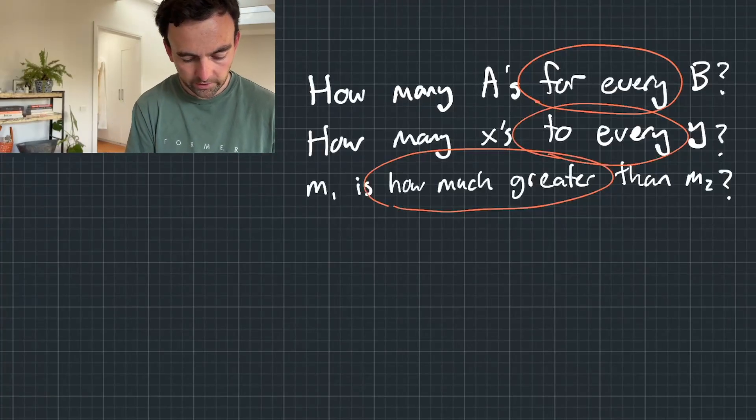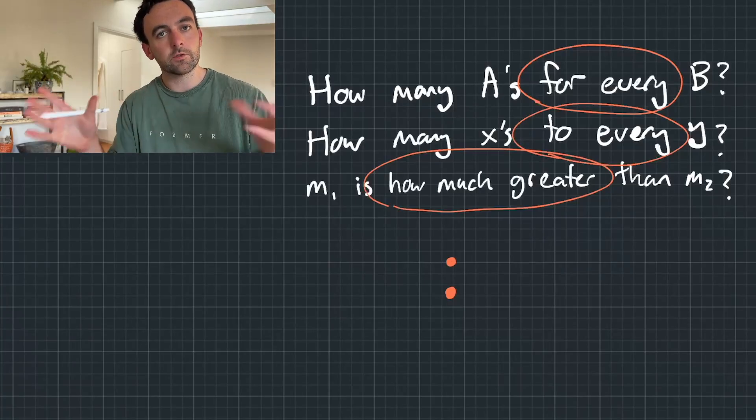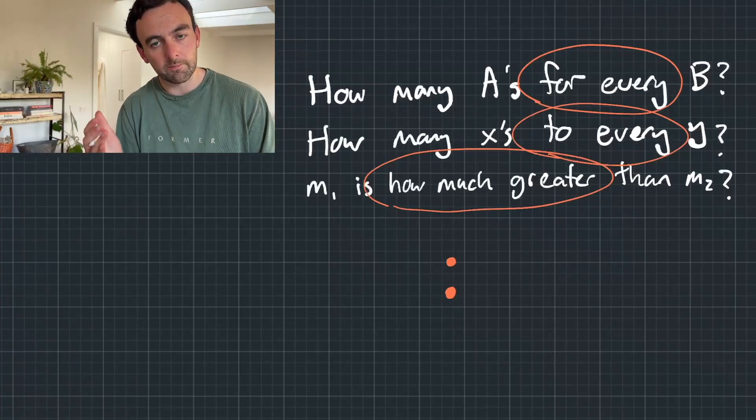When we have a ratio, we end up getting a colon thing like this, and we have two numbers either side. So this colon is how we actually compare one number to the other.